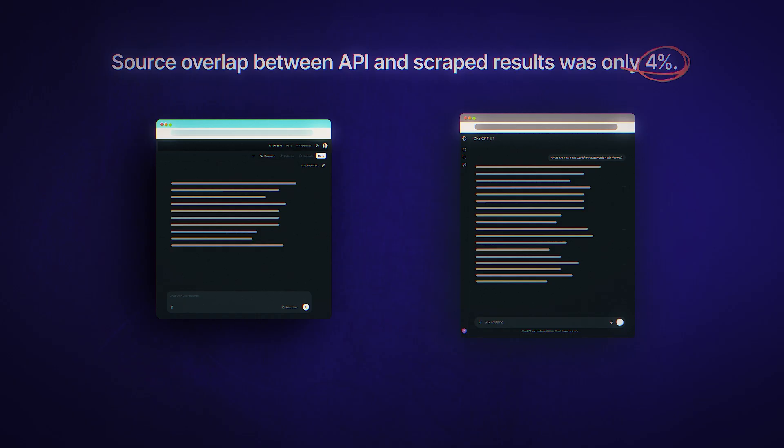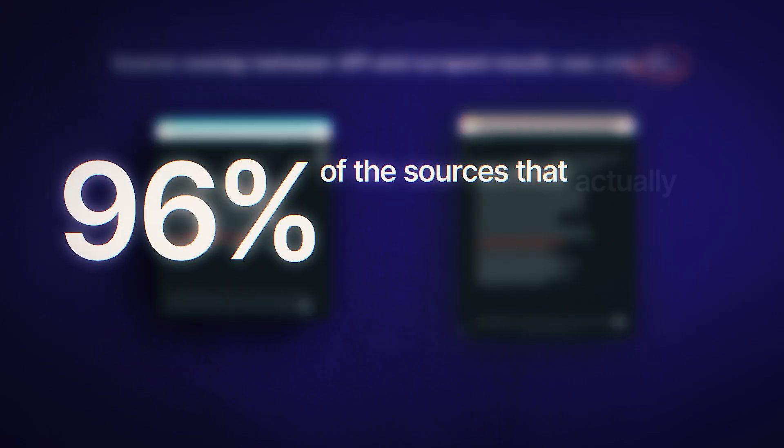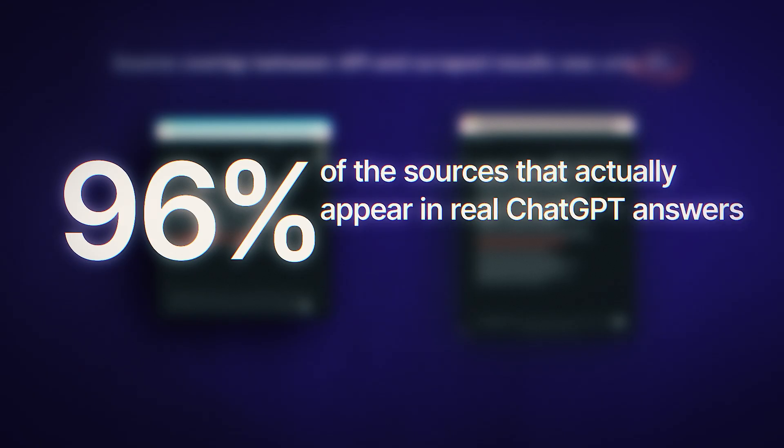So what does this actually mean for you? First, if you're using API data to decide which sources to target, you're probably targeting the wrong ones. Only 4% of sources overlapped in the ChatGPT study, meaning 96% of the sources that actually appear in real ChatGPT answers weren't showing up in the API data at all. If you've got a link-building strategy or you're creating content designed to get cited by AI and basing those decisions on API data, you're essentially optimizing for a parallel universe that your customers will never visit.